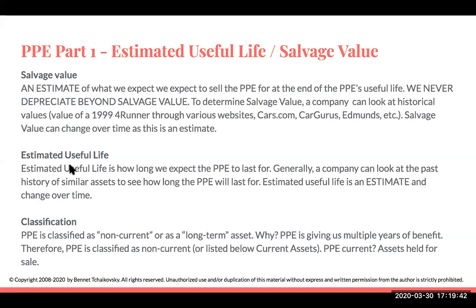Estimated useful life is how long we expect the property, plant, and equipment to last. Generally, a company can look at the past history of similar assets to see how long the PP&E will be around. If I buy a Toyota 4Runner, it'll likely last at least 10 years. As accountants, when preparing a depreciation estimate, we're looking for how reliable the information is or what management's estimate is. If I purchase a luxury vehicle made in Germany, will it last 10 years? More than likely, probably not. These are estimates, and they have to be reasonable.